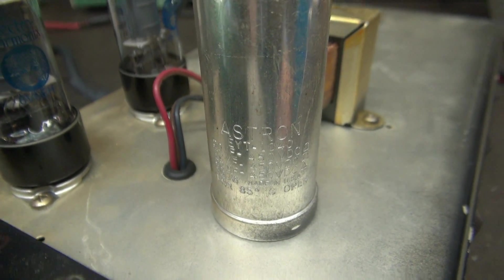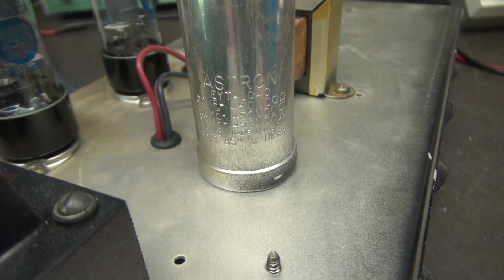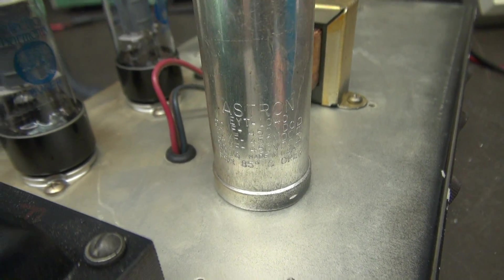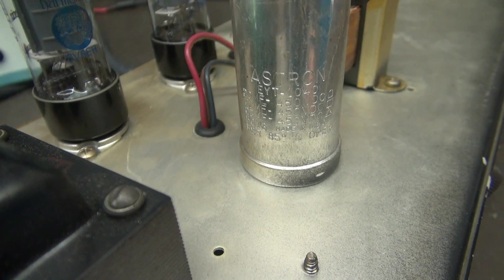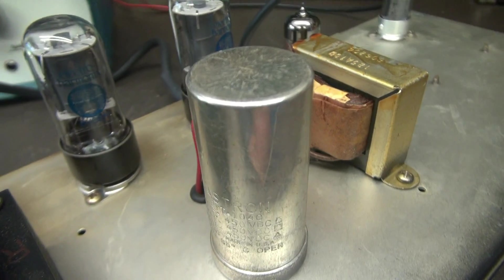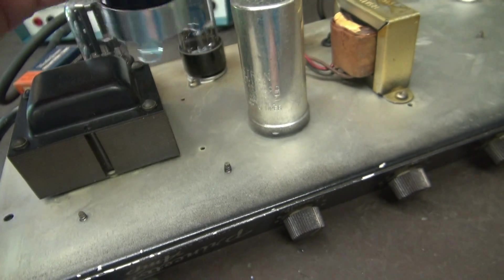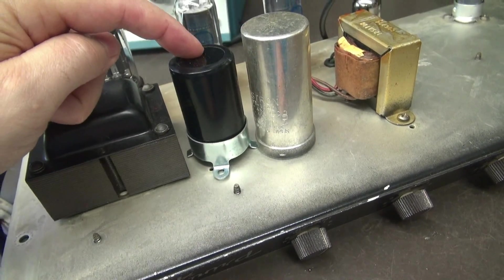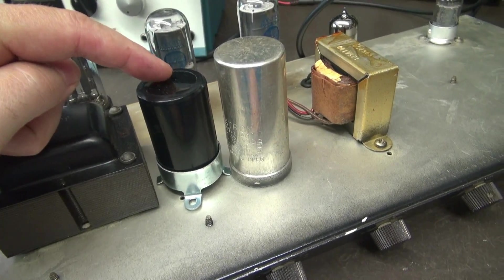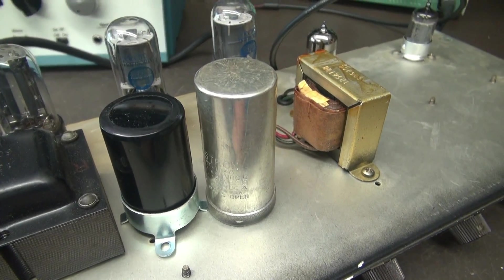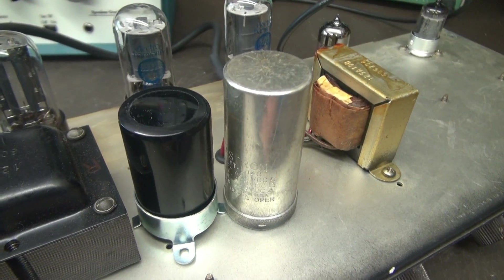So here's the old original. An old ASTRON 320 microfarad sections at 450 volts DC. Looks like it's been in there since day one. We're going to replace it with this cap. This is kind of like what you see in Marshalls. I don't have a heart attack. I've already verified this with the owner.